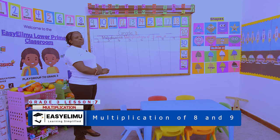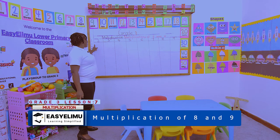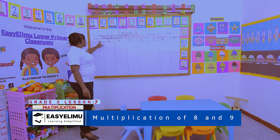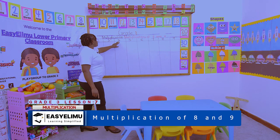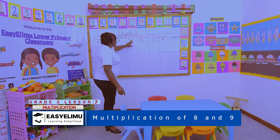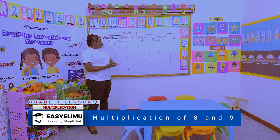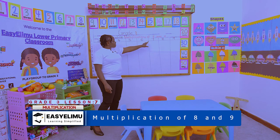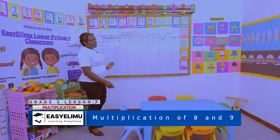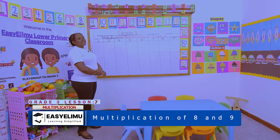Who can remind me what we did in Grade 2? We did the multiplication of 1, 2, 3, 4, and 5. Last week we did 6 and 7. Today we want to do the multiplication table for number 8 and 9.